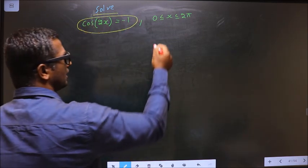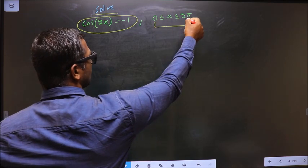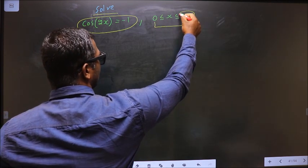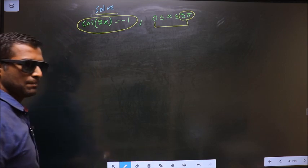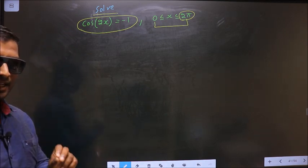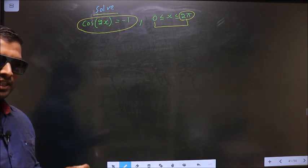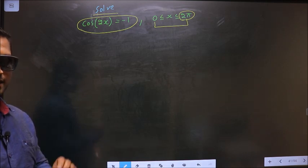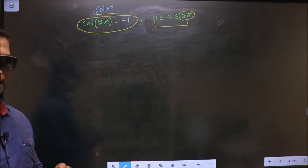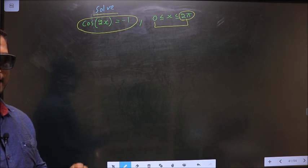And also it should lie in the interval 0 to 2π. Here you have 2π, that means you should get the answer in radians. For that, put your calculator in radians mode. I repeat, put your calculator in radians mode.